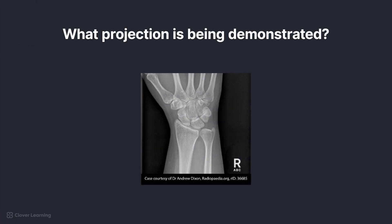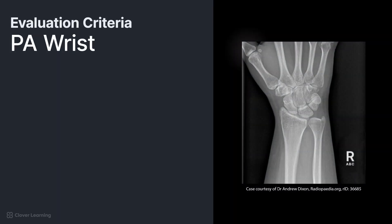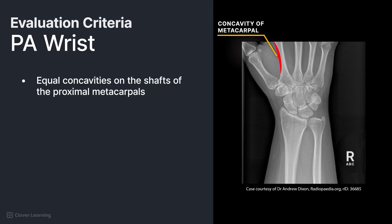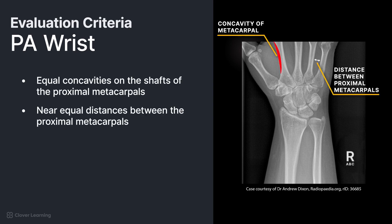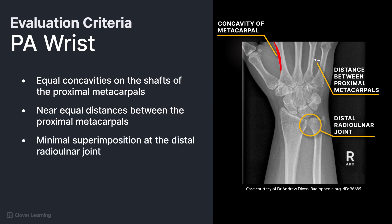Let's start with the first image. This is a PA projection of the wrist. We know this because there are equal concavities on the shafts of the proximal metacarpals, near equal distances between the proximal metacarpals, and minimal superimposition at the distal radial ulnar joint.